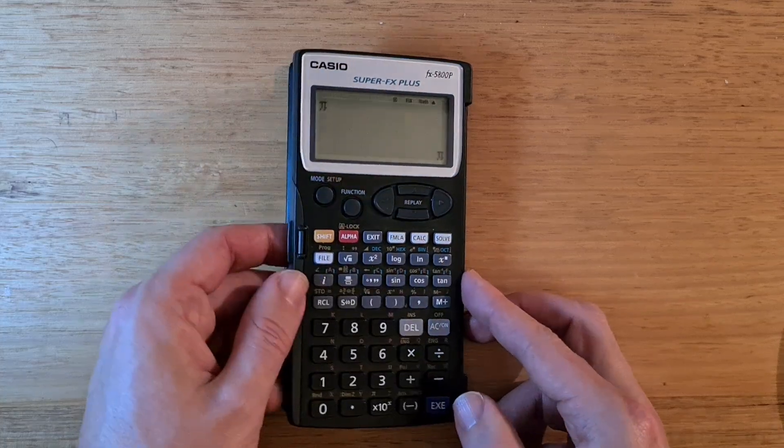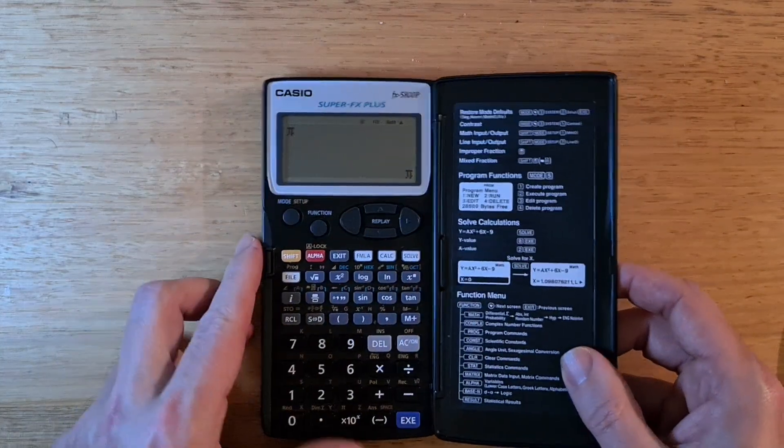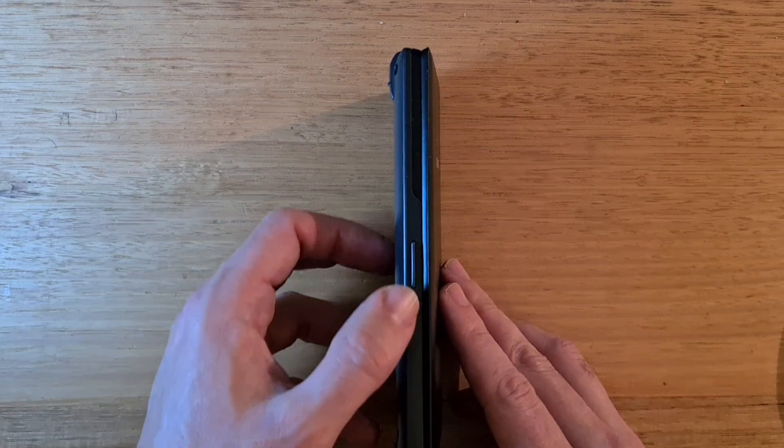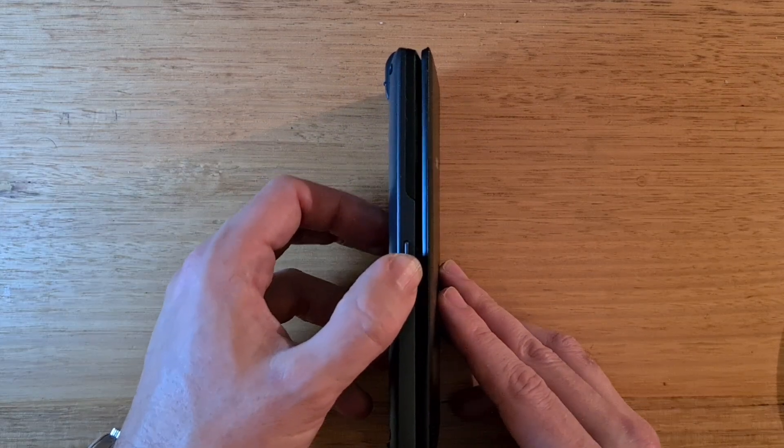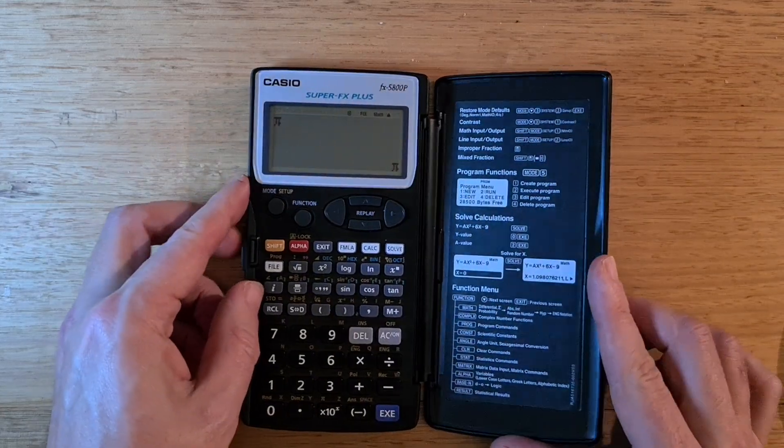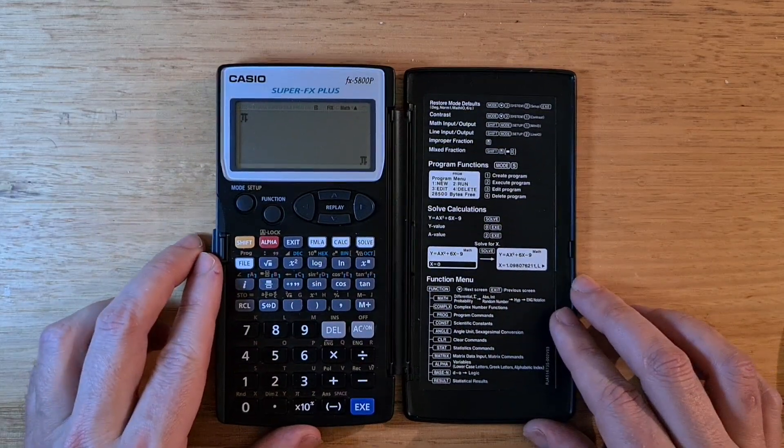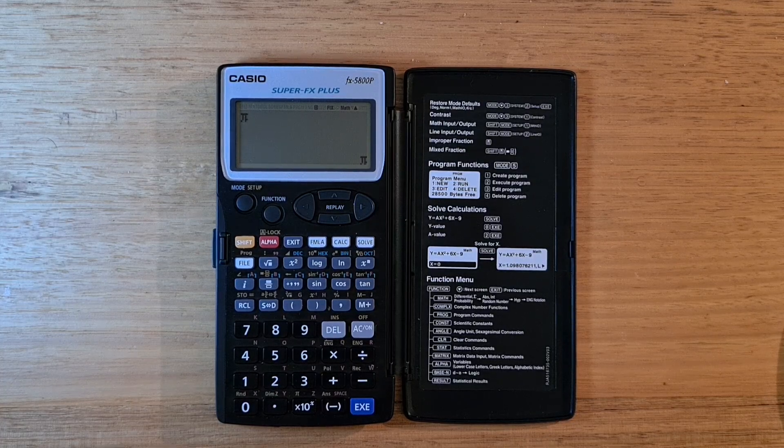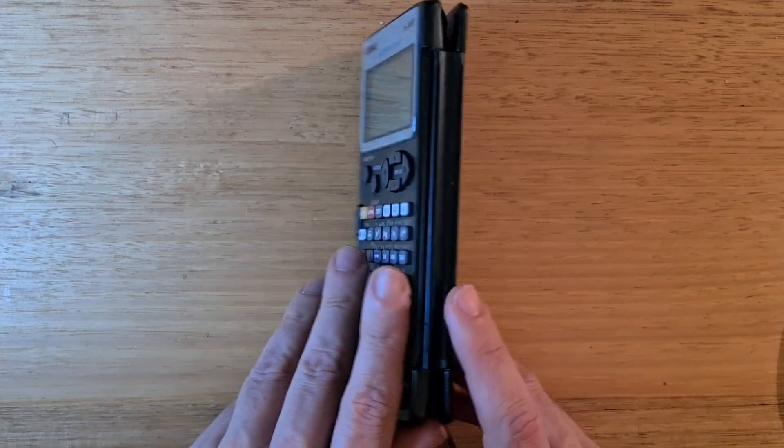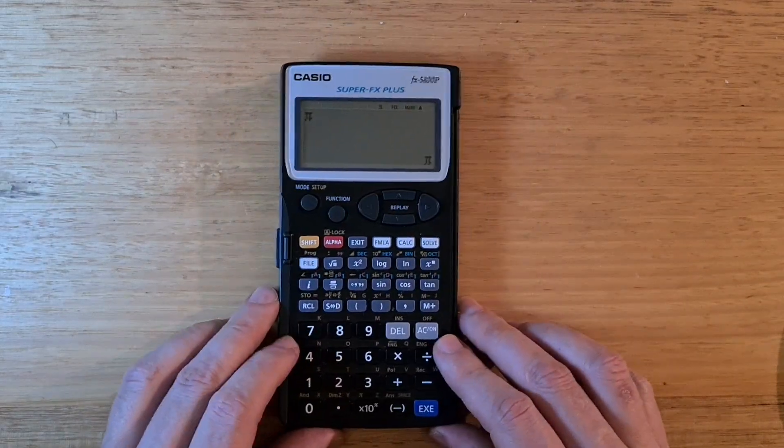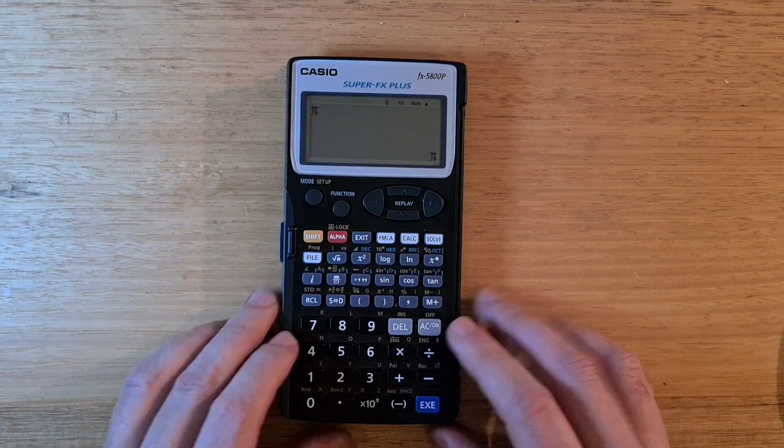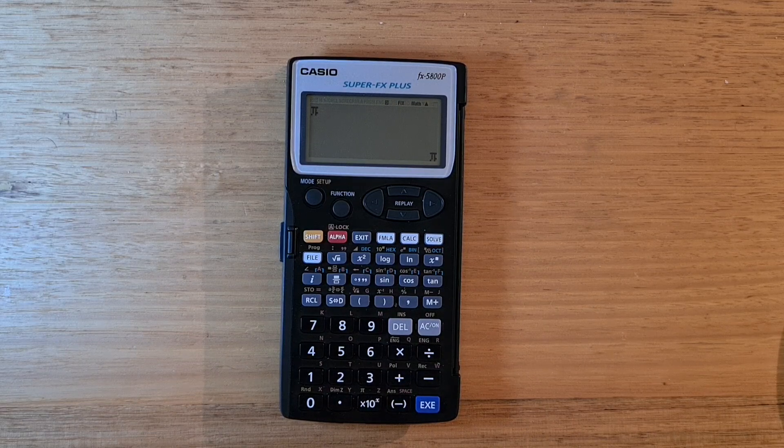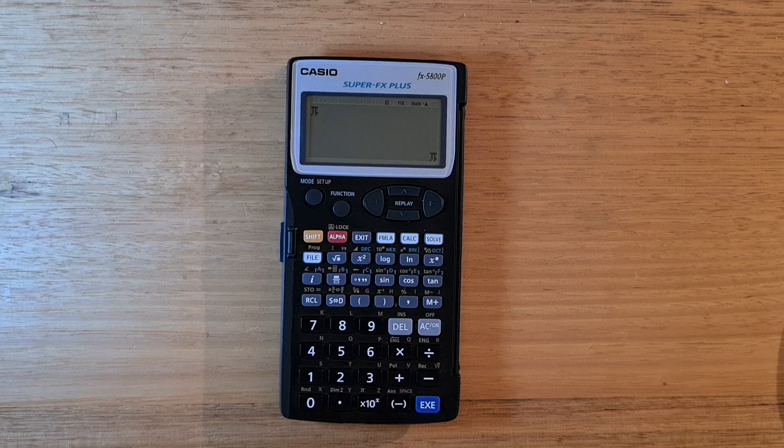So the 5800P has an attached lid that folds over and clicks into this latch. And there's a locking button on the left edge that needs to be pressed to open the lid. And when folded out, you can see the reference cards on the inside of the lid. And so the lid folds back completely so the calculator can sit on it. And the hinge is definitely the least robust part of the calculator. It's easily broken, for example, if you drop the calculator.